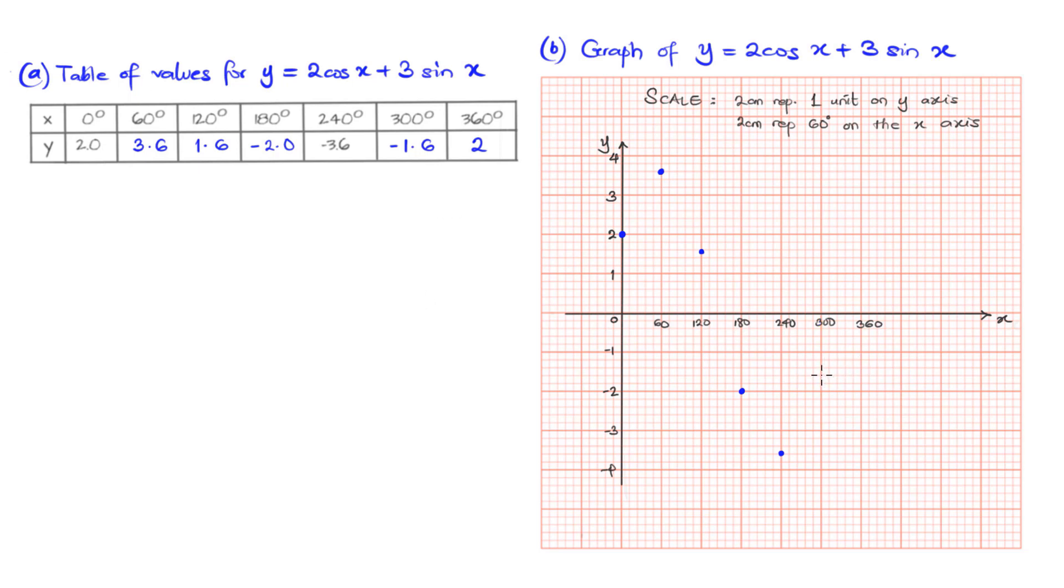When x is 300 degrees, y is -1.6. That's located here. So when x is 360 degrees, y is 2. We can go again up, and that completes the cycle. It's a complete cycle, 0 and 360 degrees. That's a complete cycle.